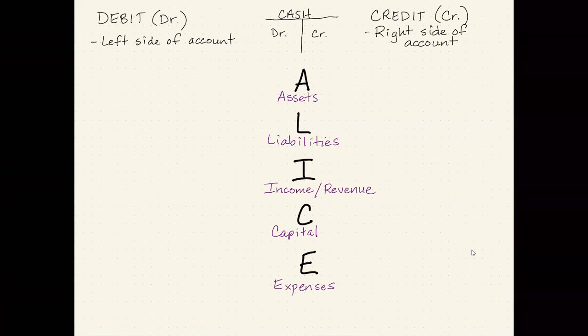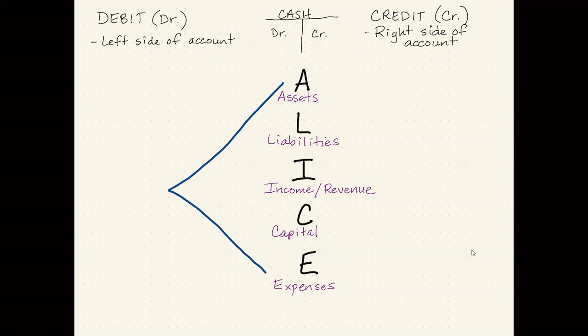Now, here's what I'm going to do with this. I'm going to take the first and last letter of Alice, the A and the E, which are your assets and your expenses. I'm going to take those two and I'm going to join them on the left-hand side of this diagram. Now, why am I joining them up on the left? Well, remember, debit is the left side of an account. So I'm joining these on the left because they're increased on the left. So that means assets and expenses are increased with a debit and decreased with a credit. So I join them on the left because they're increased on the left or they're increased by a debit.